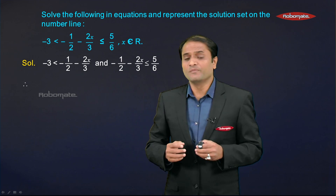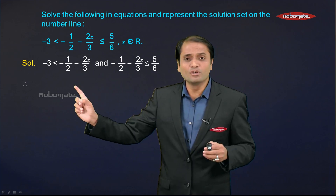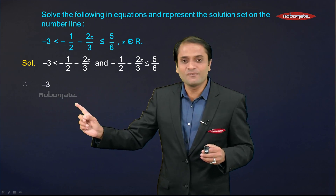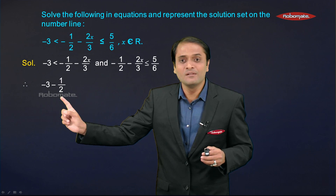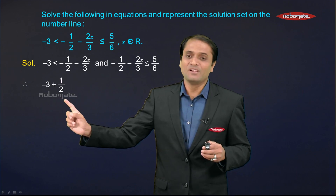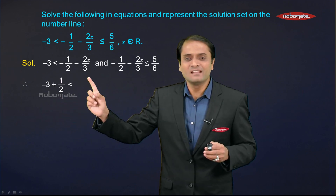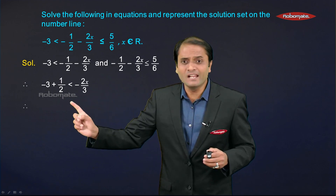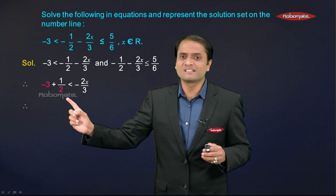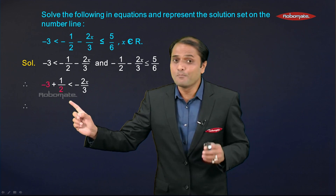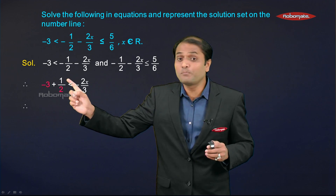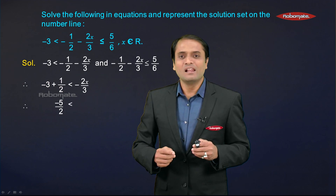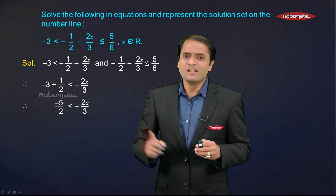Let us solve the first linear inequation. I will carry −1/2 to the LHS, so on the LHS we get −3 + 1/2, which is less than −2x/3 on the RHS. Taking the LCM on the LHS: −3 × 2 = −6, and −6 + 1 = −5, giving us −5/2 < −2x/3.